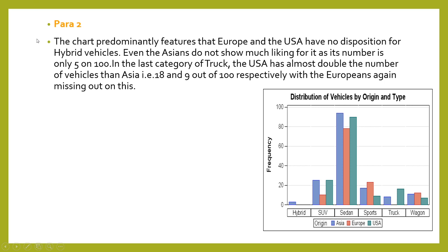For body paragraph two, covering hybrid and truck: 'The chart predominantly features that Europe and the USA have no disposition for hybrid vehicles. Even the Asians do not show much liking for it as its number is only 5 on 100. In the last category of truck, the USA has almost double the number of vehicles than Asia — that is 18 and 9 out of 100 respectively — with the Europeans again missing out on this category entirely.'